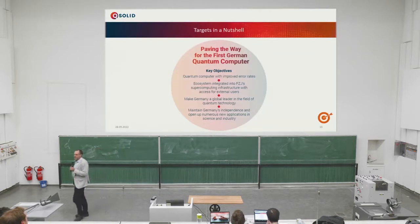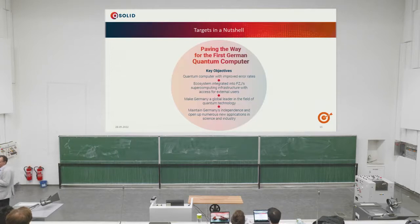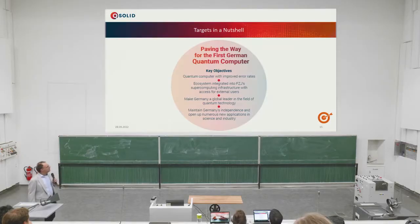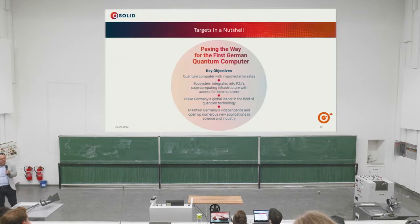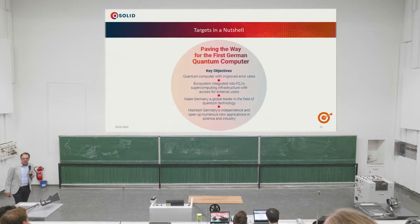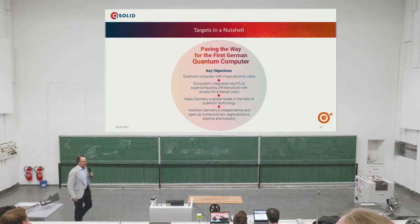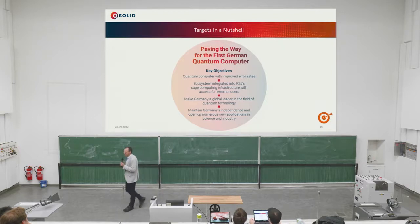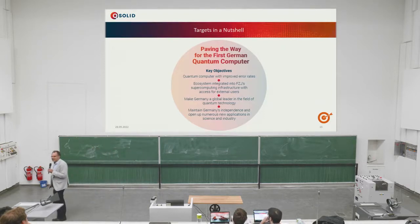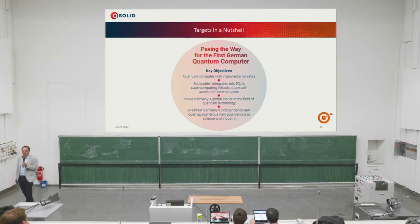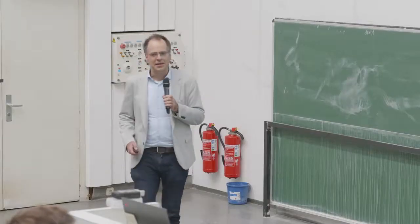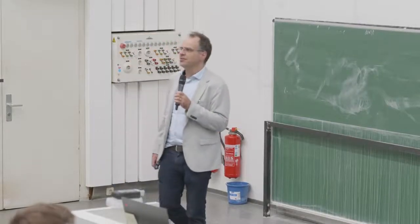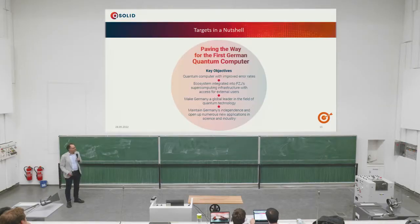When you look at quantum computing in the media, you often see superlatives about the number of qubits in a system. But when you look more closely at many platforms, including ours, the error rates are actually the limiting factor. So a high priority for us is low error rates. What we are building should be integrated into the supercomputing infrastructure at the Forschungszentrum Jülich, and it should clearly position Germany very well in quantum computing.